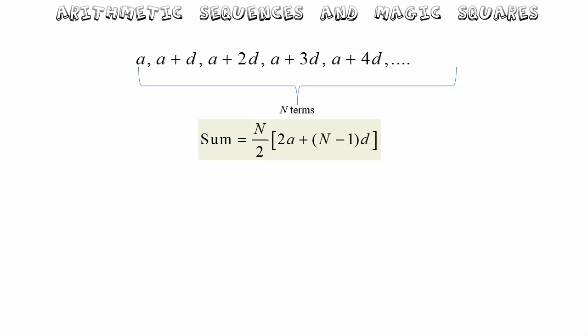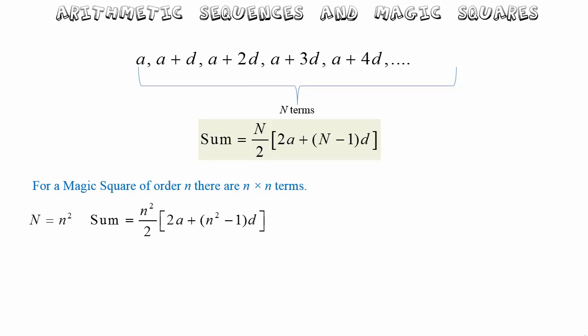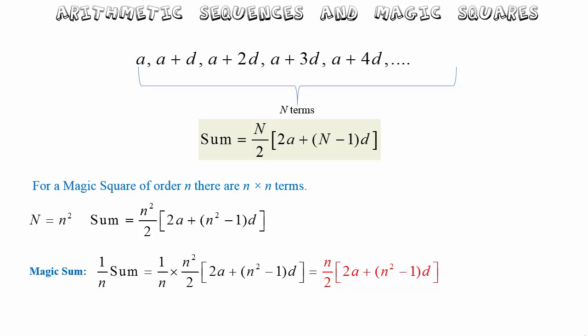For a magic square of order n, there are n squared numbers in total, so we replace the capital N in our sum formula with n squared. Since each row, column and diagonal must have the same total, each must equal one-over-n of the total sum. This gives us the magic sum formula: n over 2 times the bracket 2a plus bracket n-squared minus 1 times d.